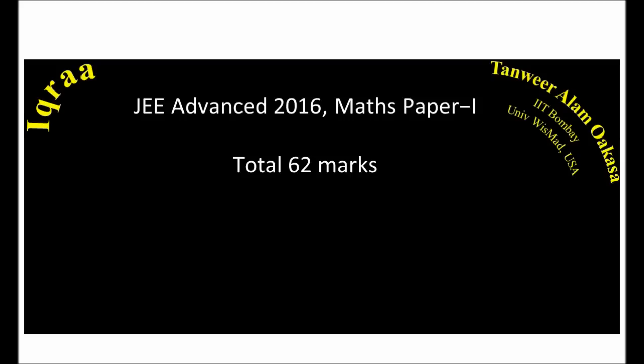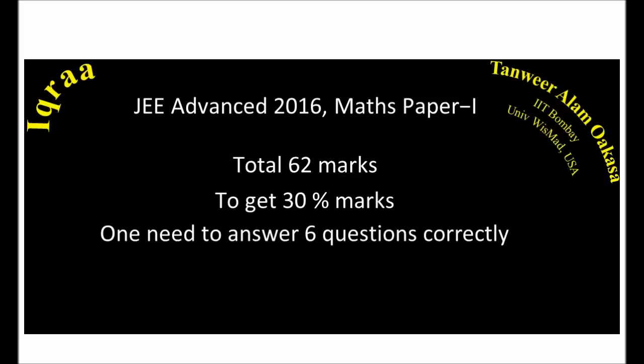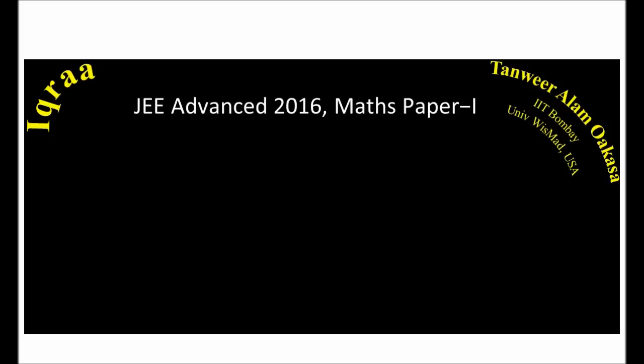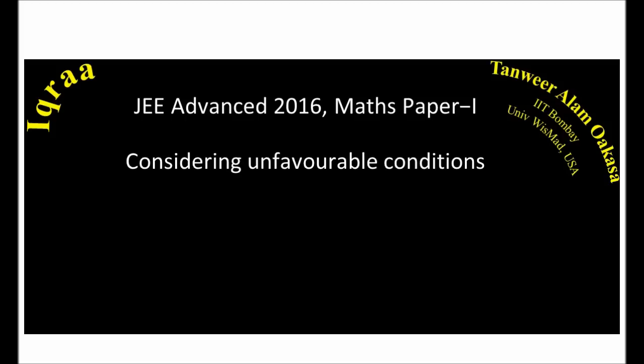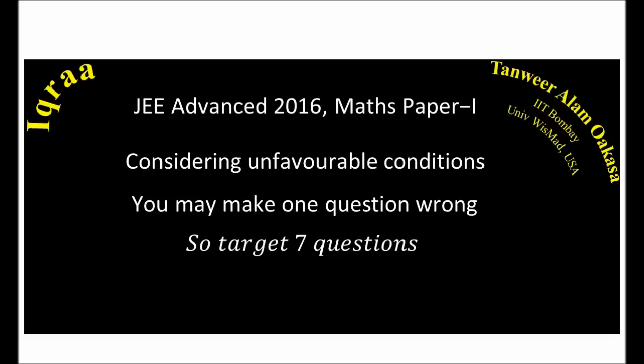I am here to tell you how to perform up to your potential. In total, there were 62 marks, 18 questions, and to get 30% marks, one needs to answer 6 questions correctly — just 6 questions. Now, considering unfavorable conditions, you may make 1 mistake. So just target 7 questions where you make 1 mistake, and still you get 6 correct questions.